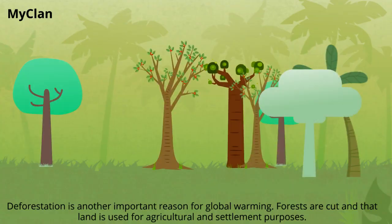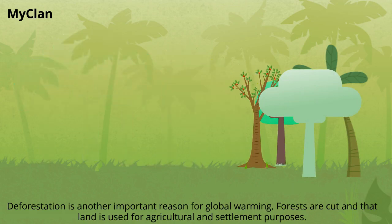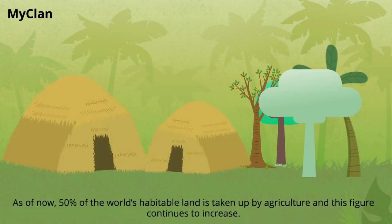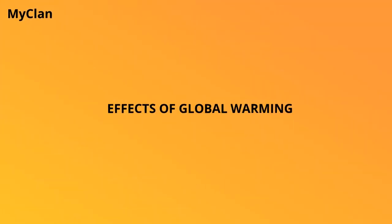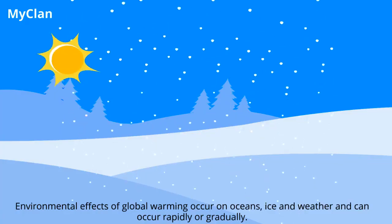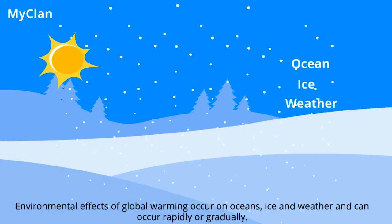Deforestation is another important reason for global warming. Forests are cut and that land is used for agricultural and settlement purposes. As of now, 50 percent of the world's habitable land is taken up by agriculture, and this figure continues to increase.